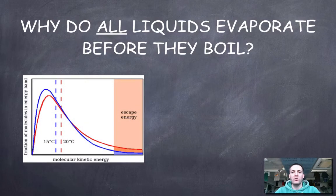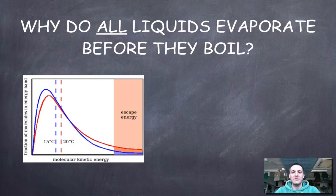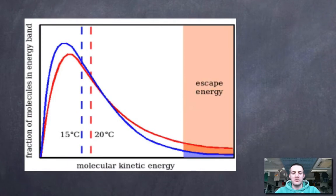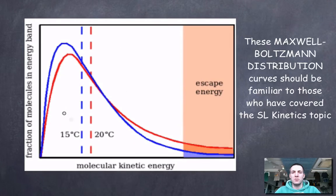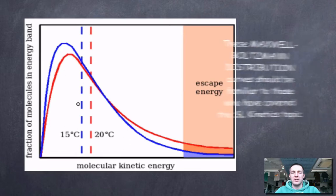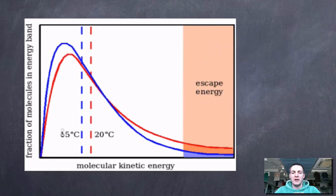Let's start by talking about why all liquids evaporate before they boil. Puddles will evaporate and be gone the next day even though the water never reached 100 degrees. We can understand that by thinking about kinetic theory and talking about the Boltzmann distribution of the energies of the particles in a liquid.